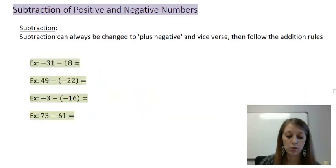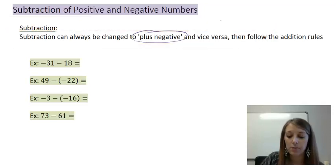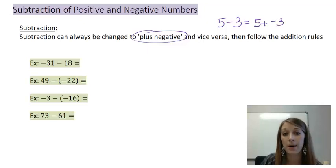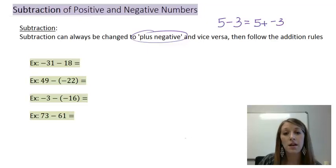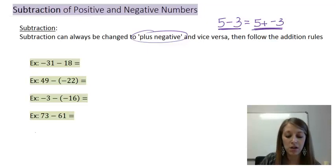Moving on to subtraction. The trick with subtraction is you can always convert it to addition. Subtraction can always be changed to plus a negative. For example, 5 minus 3 can be changed to 5 plus a negative 3. Or you can do it the other way — if you have 5 plus a negative 3, you can change it to 5 minus 3 — whichever is most comfortable for you. I suggest you pause the video and see if you can work the examples shown.